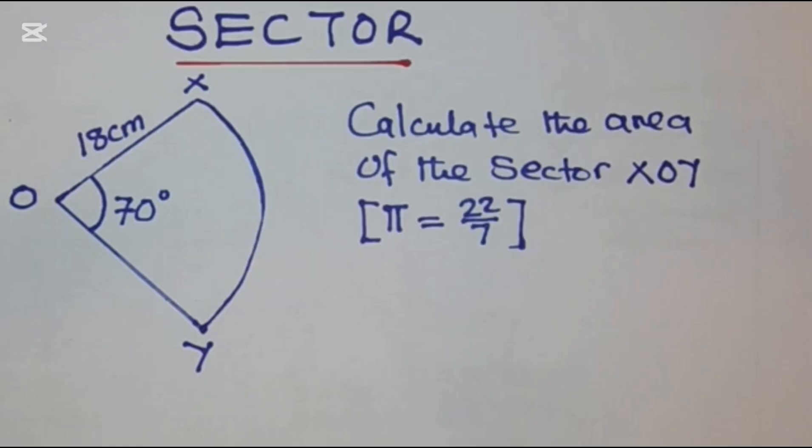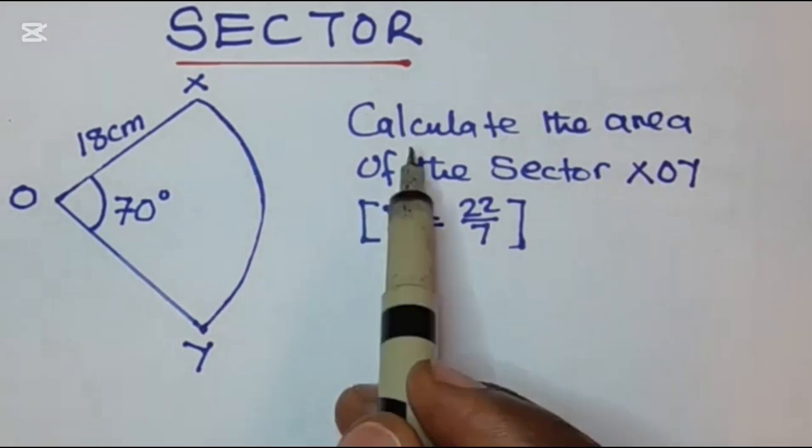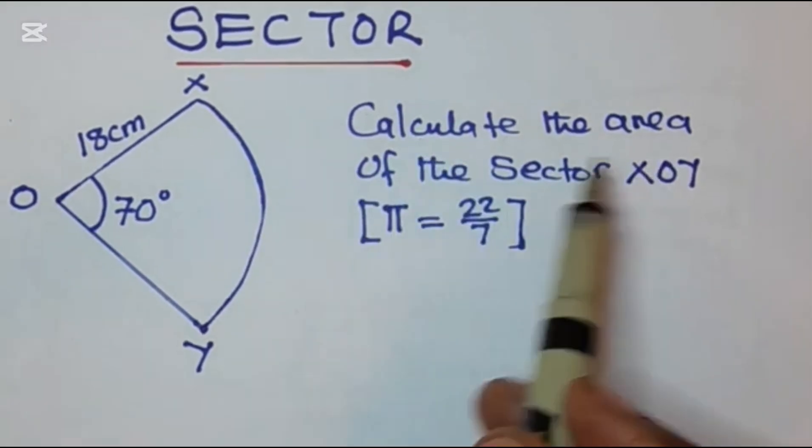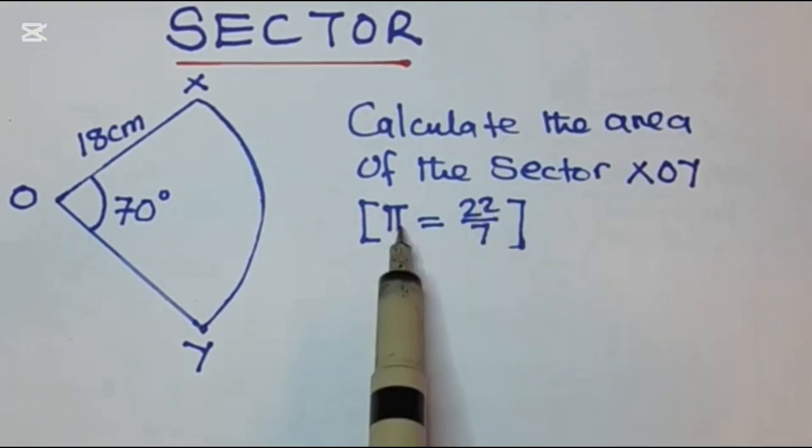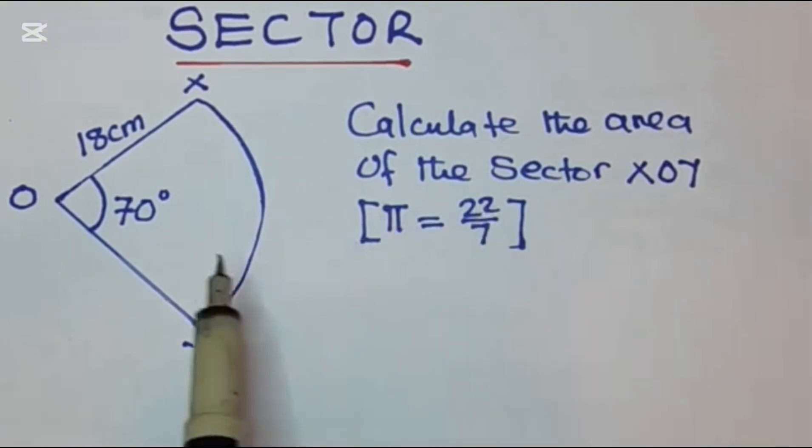Hello and welcome to this channel. In this video we are going to look at how to calculate the area of a sector. The question says calculate the area of the sector XOY. Take pi to be 22 over 7. So this is a sector with radius 18 centimeters.